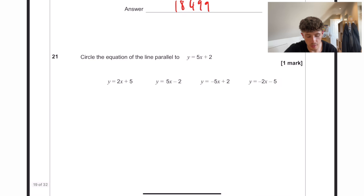Circle the equation of the line that is parallel to y equals 5x plus 2. When you have a parallel or perpendicular question, literally just look at the gradient. Now the gradient comes before the x, so there, which is the 5. Which other one has an x value of 5? That one there, so that's our answer.